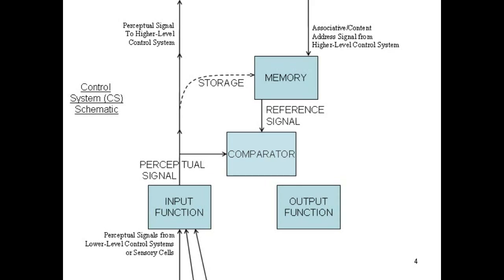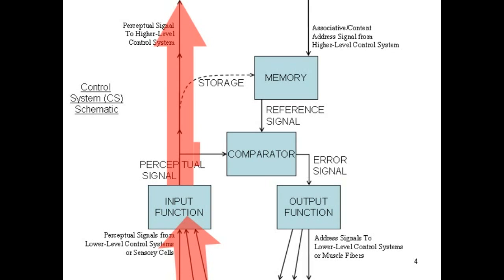Unless the input signal and the reference signal agree, the comparator sends an error signal to the output function, which in turn sends signals addressing one or more lower level CSs, or reaching outside the CS realm to stimulate one or more muscles. Signals are not generally simple. Indeed, they may vary enormously in the amount of information they carry. The signals of a mid-level CS might be comparable in bandwidth to signals of high-definition television complete with sound.